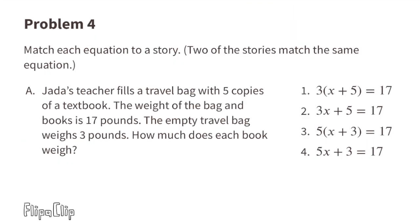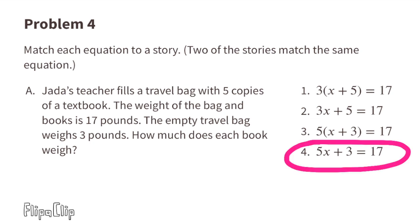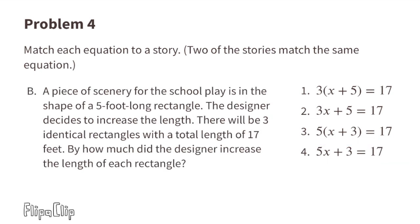Problem number four: match each equation to a story — two of the stories match the same equation. Story A: Jada's teacher fills a travel bag with five copies of a textbook. The weight of the bag and books is 17 pounds; the empty bag weighs 3 pounds. How much does each book weigh? Think of this as five books times an unknown weight plus three pounds equals 17 pounds. Story A matches equation four.